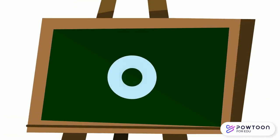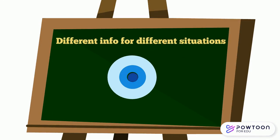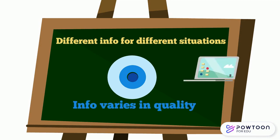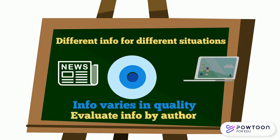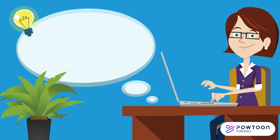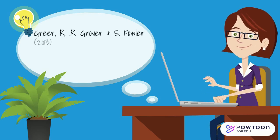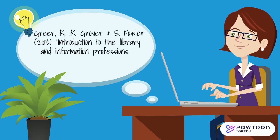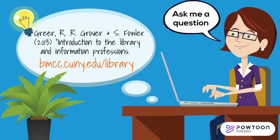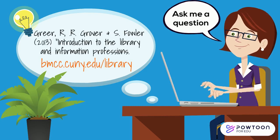In closing, remember that different information is appropriate for different situations — for instance, it makes sense to look up a restaurant review on the internet. Also, information varies in quality, whatever the source. And finally, it is key to always ask who wrote this information, and are they credible? Check out some theories from library school for inspiration, and make sure you cite your sources too. Lastly, don't forget to contact a librarian on your quest toward becoming a more knowledgeable human being.